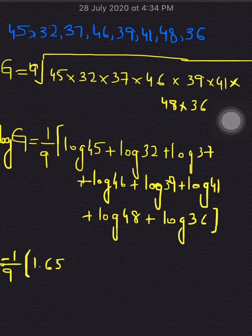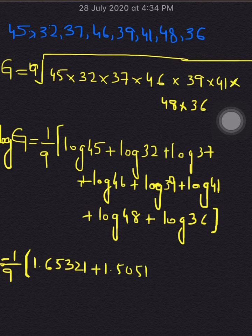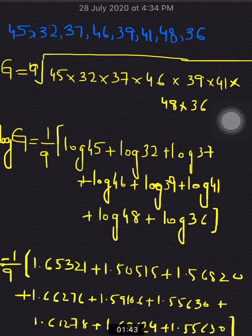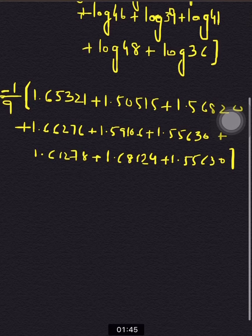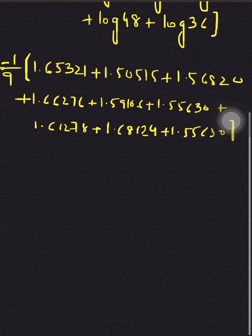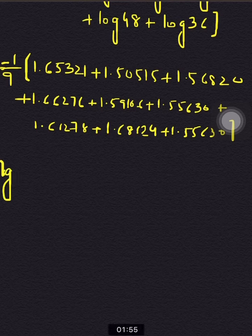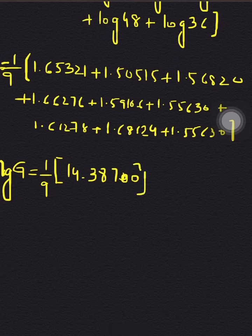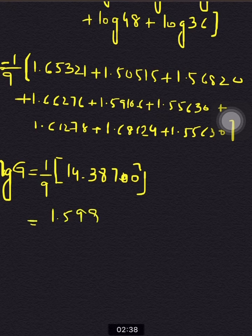Now I calculate the individual log values: log 45 = 1.65321, log 32 = 1.50515, and continuing to solve all the log values. Adding all these values together gives a sum, so log of G equals 1 over 9 times 14.38700.